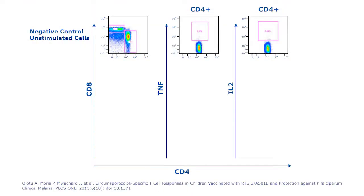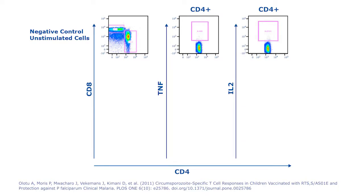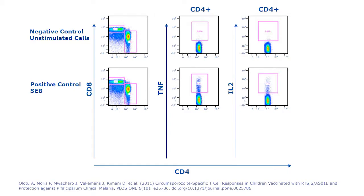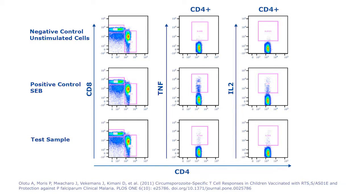Negative biological controls can exclude non-specific antibody binding, as shown in this example where unstimulated T-cells were used as a negative control for cytokine expression. Equally important are positive biological controls, such as the use of a potent mitogen to stimulate the cells and confirm assay performance. When combined, these controls provide confidence on either negative or rare dimly positive results.